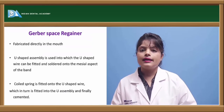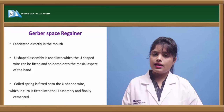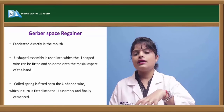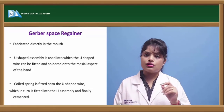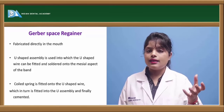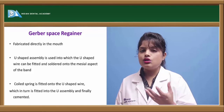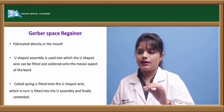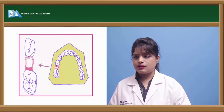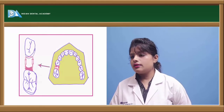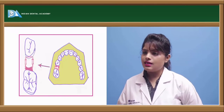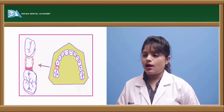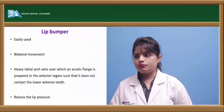The Graber space regainer has a U-shaped assembly which is fabricated directly in the oral cavity, without requiring a cast. This makes it a simpler, easier, and quicker method. The U-shaped assembly bands the tooth and is fitted to the middle of the band. It contains a U-shaped wire and a coil spring for activation. The U-shaped wire extends from the primary second molar with coils attached and placed on the first permanent molar.